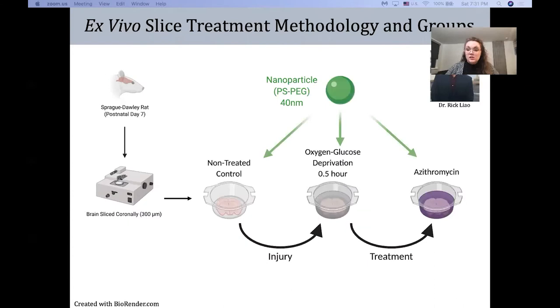And those experiments fall into three treatment groups. One, our non-treated control. Two, our injured group, which for this paper is oxygen glucose deprivation. And three, our treatment group. We place nanoparticles into all of these slices to see how they react in the brain microenvironment in the presence of injury and treatment.